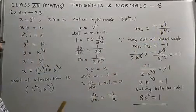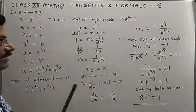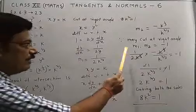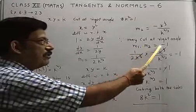Now one condition is given that they cut at right angle or orthogonal, and for that we have a formula: m₁ × m₂ = -1.